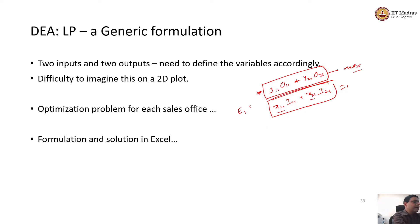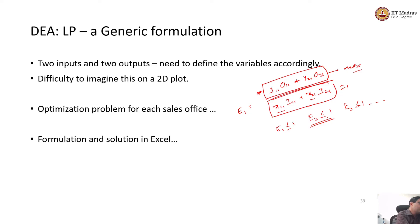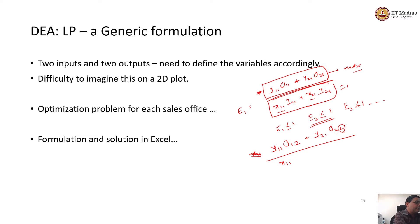Using the weights for DMU1, none of the other DMUs should get an efficiency greater than one. So e₁ ≤ 1, e₂ ≤ 1, e₃ ≤ 1 are going to be additional constraints. The efficiency for DMU2 is calculated using the output weights y₁₁ and y₂₁ from DMU1 but with the output values o₁₂ and o₂₂ from the second DMU, divided by x₁₁·i₁₂ + x₂₁·i₂₂.